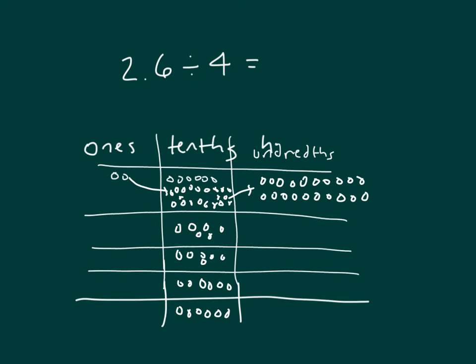And when I divide 20 by 4, I get 5. 5, 10, 15, 20. And then so our number is 0.65 as our answer.